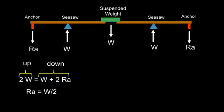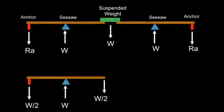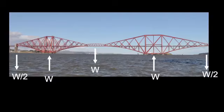We can solve it in one of two ways. The algebraic solution tells us that the forces in the upward direction equal the forces in the downward direction: 2W is going up, and W plus 2Ra is going down. Solving that, we get Ra equals W over 2. Another way is to divide the system into two seesaws — half of weight W goes to one seesaw and the other half to the other, so you know that Ra must be W over 2. This double seesaw example is exactly how the Firth of Forth Bridge acts: the suspended weight W is in the center, the supports at the center towers push up with W, and the anchors pull down with W over 2.